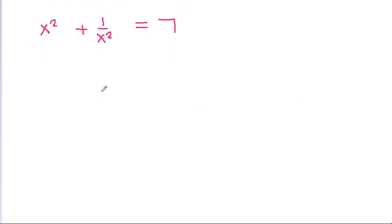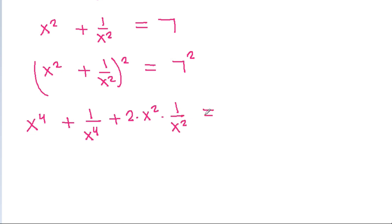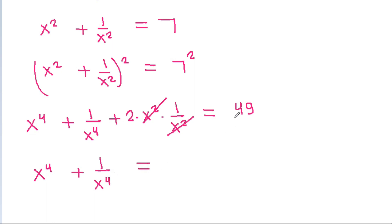Squaring x squared plus 1 by x squared equals 7, we get x squared plus 1 by x squared whole squared equals 49. Expanding, x power 4 plus 2 plus 1 by x power 4 equals 49, so x power 4 plus 1 by x power 4 equals 47.